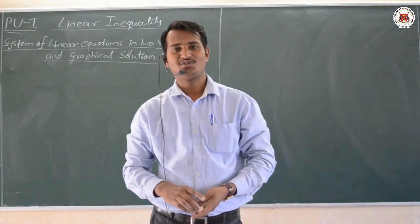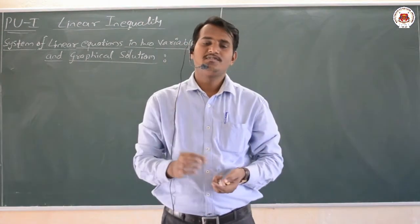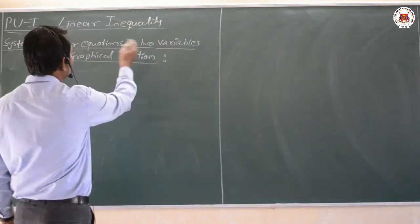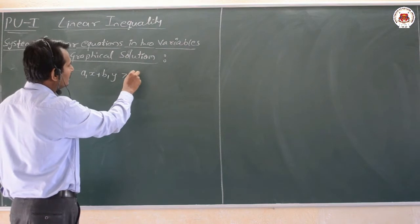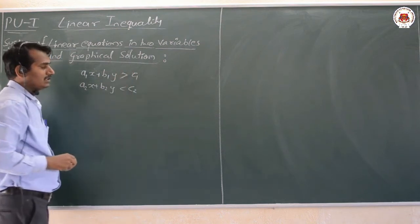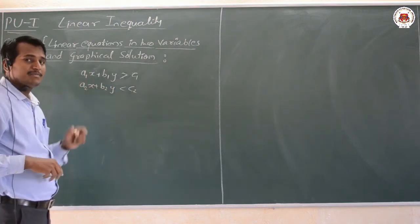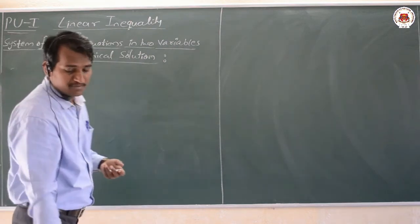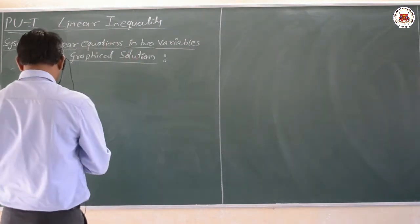Welcome to Royal Palace PUC College online classes. In this session, we shall start with the solution of systems of linear equations in two variables, x and y. A system of linear equations in two variables consists of two or more equations — for example, a1x + b1y ≥ c1 and a2x + b2y < c2. We may have two or more simultaneous equations.